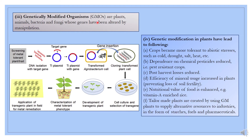Genetically modified organisms are plants, animals, bacteria, and fungi whose genes have been altered by manipulation. For example, genes are extracted from a desired plant and incorporated into another plant. The new plant developed by taking genes from another organism is called a genetically modified organism. In this way we are developing different types of plants, animals, bacteria, and fungi. For example, in E. coli we are growing a part of insulin — so that E. coli becomes a genetically modified organism. Whenever a foreign gene is incorporated into the host, it is referred to as a genetically modified organism.